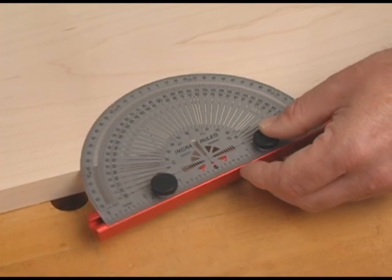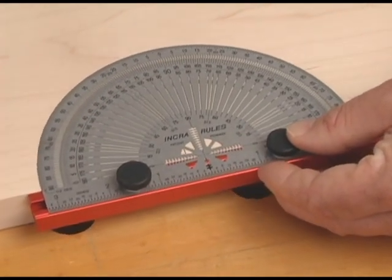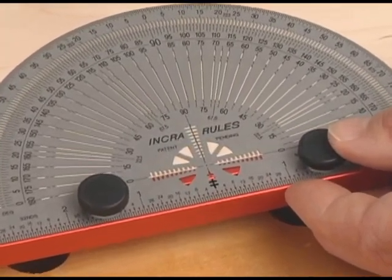The red T-bar ensures exact placement along the edge of your work, while the view window makes it easy to find and align with your starting point.